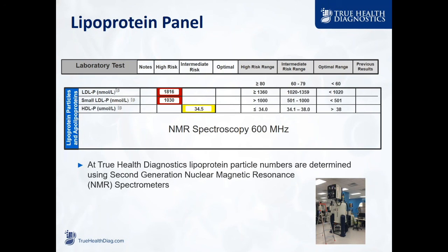You see a picture of what the NMR apparatus looks like, with a six-foot ladder in front showing the size of these spectrometers. They report to you LDL particle counts in nanomoles per liter, small LDL particle counts in nanomoles per liter, and HDL total particle counts in micromoles per liter. Most of us have about 18 times more HDLs than we do LDLs. The LDL-P of 1,816 doesn't mean there are 1,816 LDL molecules — that's 1,816 nanomoles, which represents quadrillions of LDL particles.